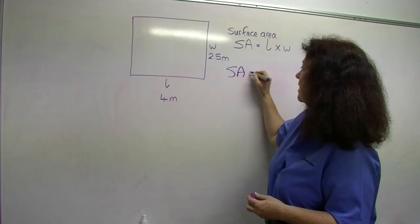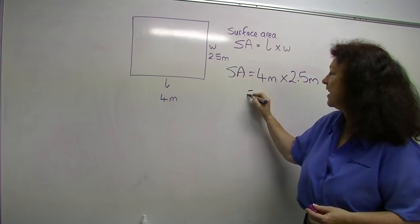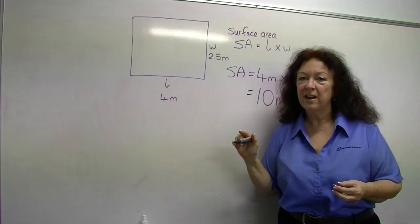So let's do one. Now, the surface area of this particular rectangular tank is 4 metres long by 2.5 metres wide, giving us a result of 10 square metres. Now you'll find that I'm the unit police. Make sure you use your units in your calculation, then you won't get yourself confused later on.